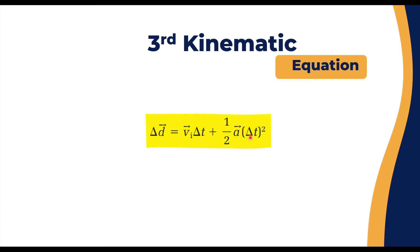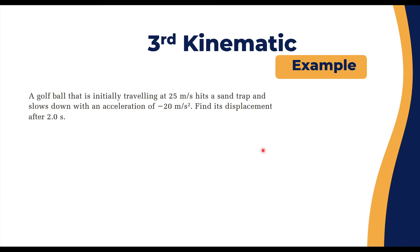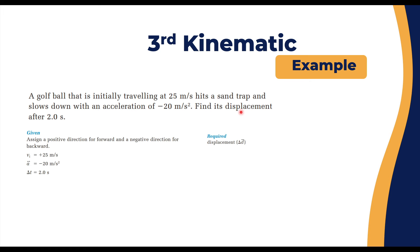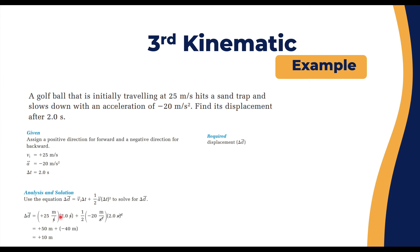Example using the third kinematic equation: a golf ball initially traveling at 25 m/s hits a sand trap and slows with acceleration −20 m/s². Find its displacement after 2 seconds. Given: v-initial = 25 m/s, a = −20 m/s², Δt = 2 s. Using Δd = v-initial × Δt + one-half × a × Δt².